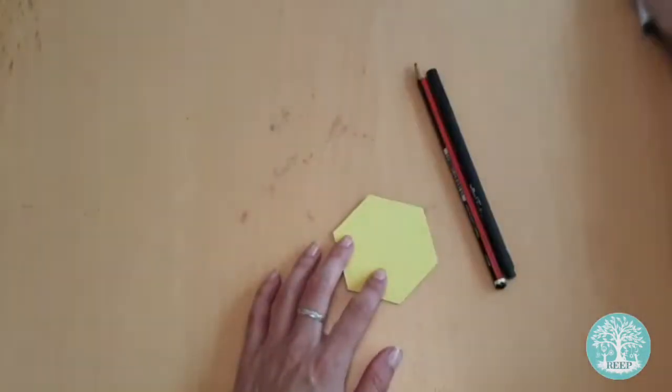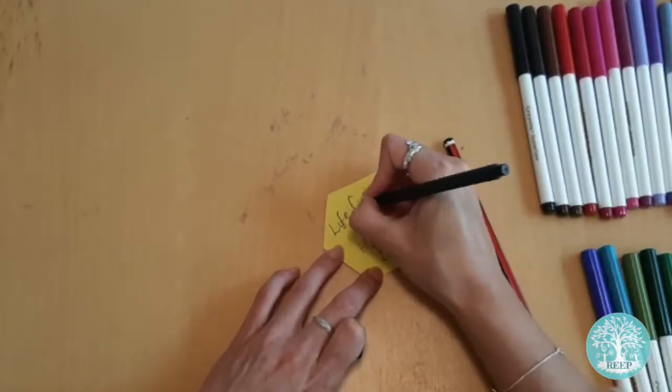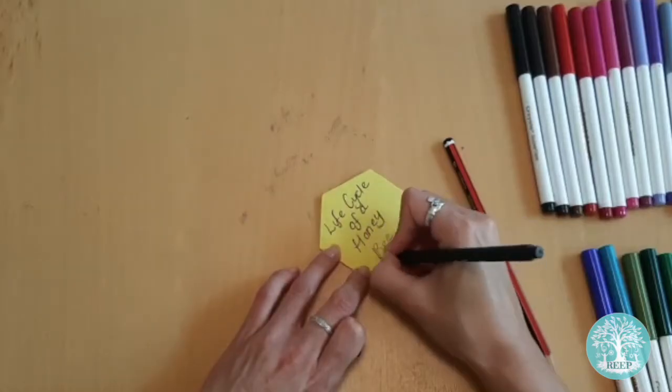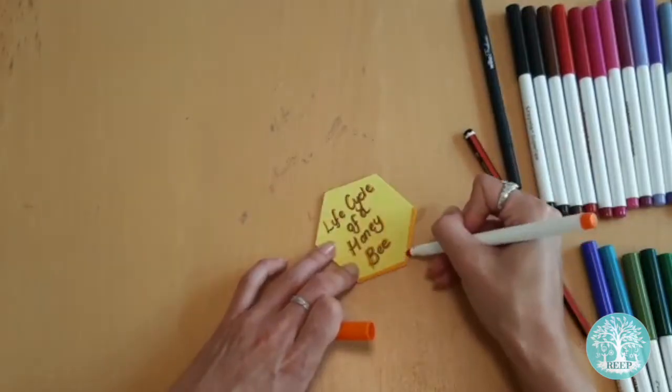Turn your booklet so that the folded edge is on the left with the page opening to the right. This is the front cover of your booklet. Use your coloured pens to decorate it with a colourful title saying Life Cycle of a Honey Bee.